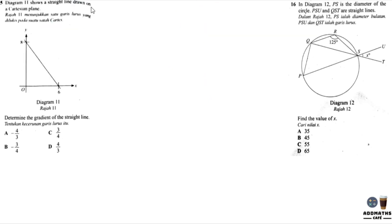Question 15 shows a straight line drawn on the Cartesian plane. Determine the gradient. To get gradient, there are two formulas: y2 minus y1 divided by x2 minus x1, or negative y intercept divided by x intercept. Y intercept means cut at y axis. So this is your y intercept. And cut at x axis is called x intercept.